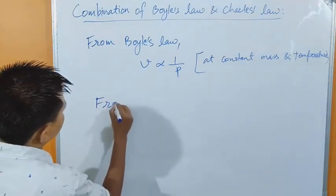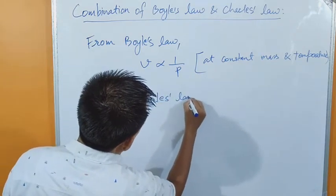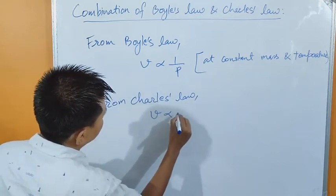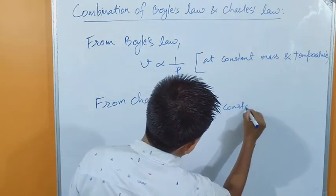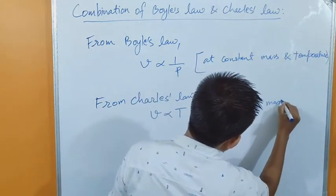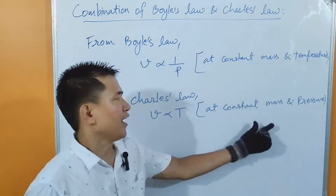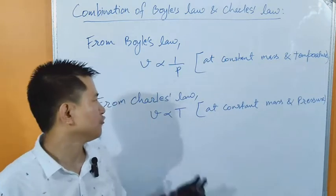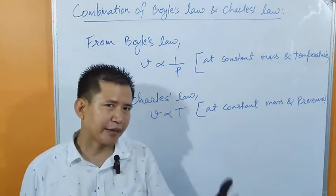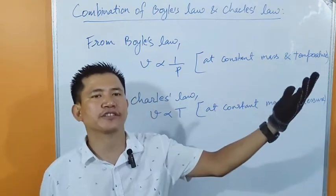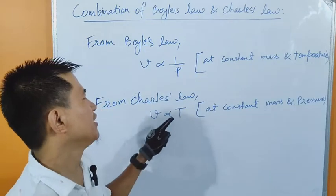And from Charles' Law, we have volume is proportional to its absolute temperature at constant mass and pressure. Mass and pressure of the gas should remain constant. At constant mass and pressure of the gas, volume of gas is directly proportional to its absolute temperature. That means if temperature increases, volume of gas also increases, and if temperature decreases, volume of gas also decreases. This is what Charles' Law tells us.